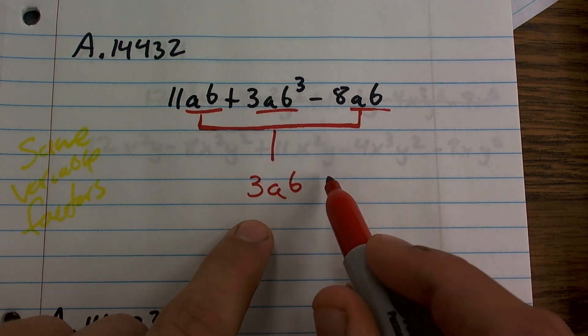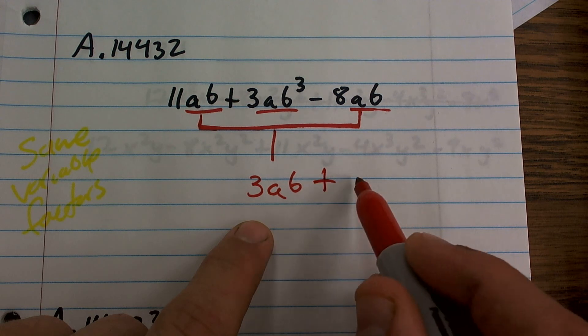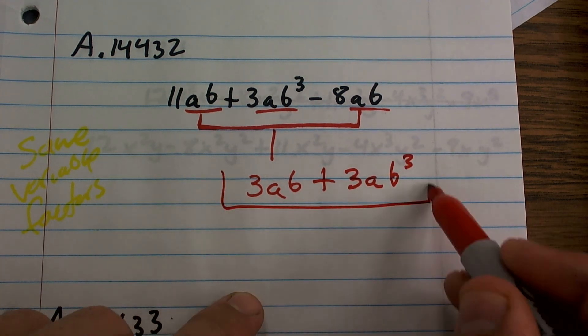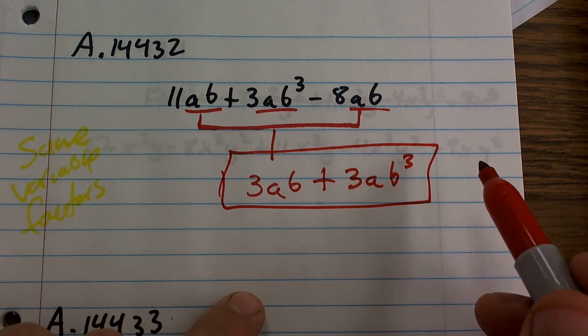And then I can't do anything with that 3 AB cubed. So I just say plus 3 AB cubed. And there you go.